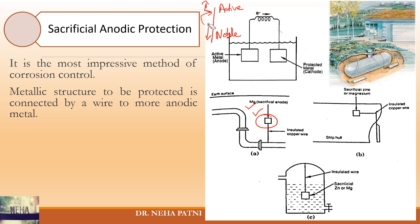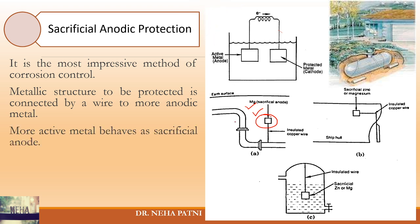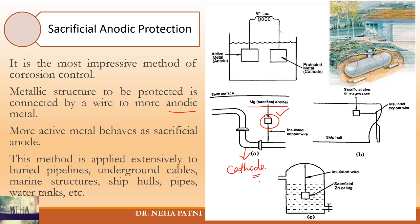So you select the material which is more active than your metal — higher in the galvanic series. When you connect it to the more anodic metal, corrosion occurs at the anode, and your metal is no longer the anode. You have made it a cathode because now there is a more active metal in conjunction with it. This is called the sacrificial anode.